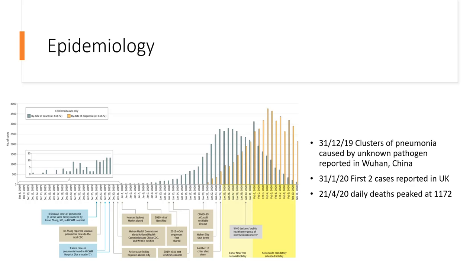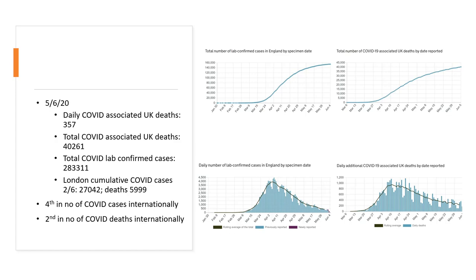COVID continued to spread in the UK, especially in London, with a peak of daily deaths at 1,172 on the 21st of April. The graphs show the total number of cases versus time on the left and total number of deaths versus time on the right, with the graphs below showing daily cases and deaths respectively. At the time of this lecture, daily COVID deaths were 357, suggesting we were over the first peak. Total UK COVID-associated deaths exceeded 40,000, total lab-confirmed cases exceeded 280,000, and London had over 27,000 cumulative cases and 6,000 deaths.